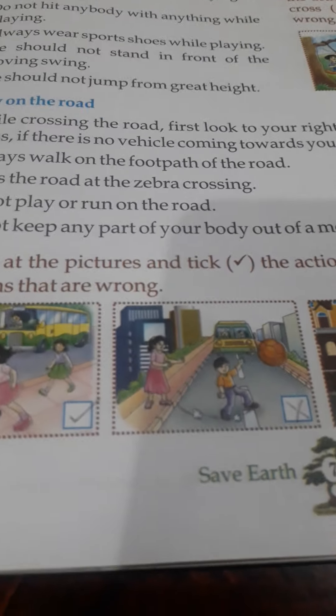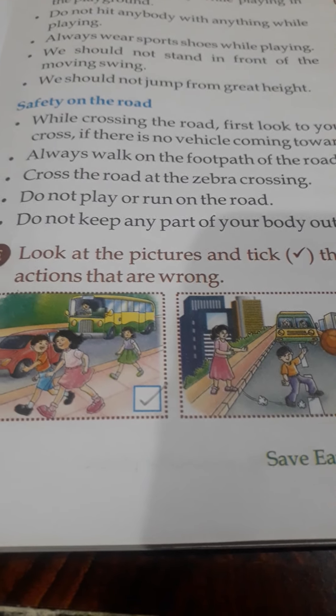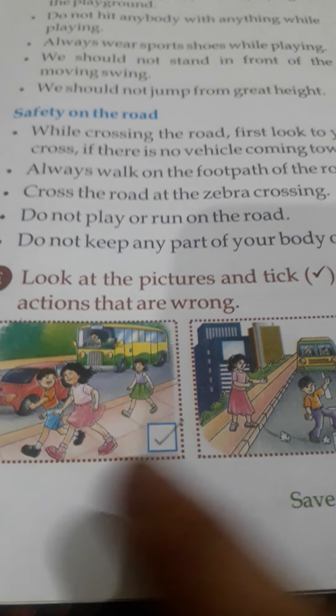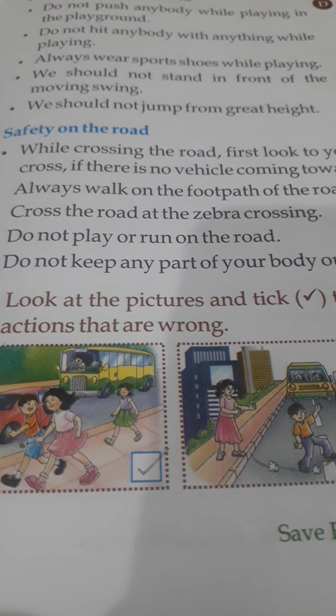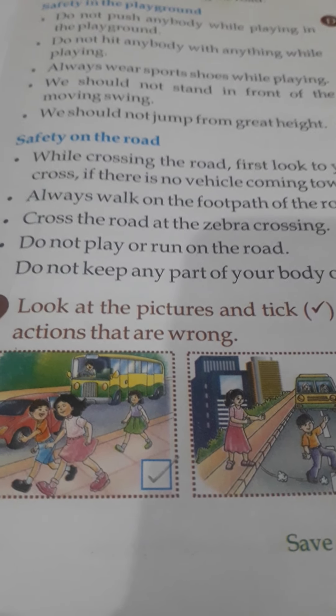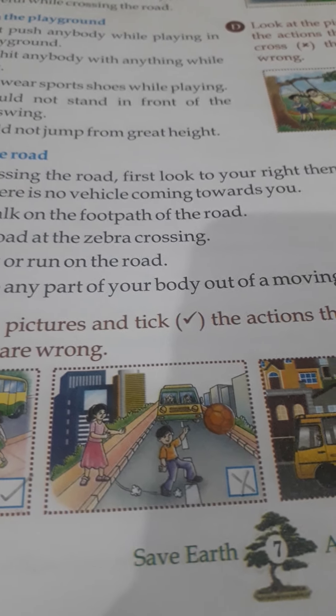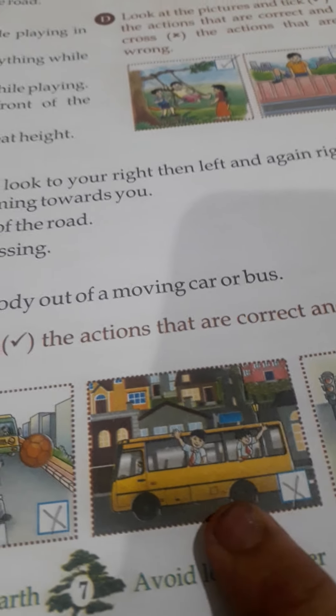Now students, we will move to the last exercise of this chapter, Exercise E. The first picture is correct, where passengers of the bus or people are walking on the footpath. The second and the third picture are wrong, and the last one is correct.